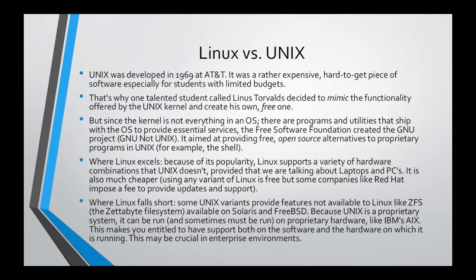Another thing is that because Unix is a proprietary system, it can — and sometimes must — be run on proprietary hardware. For example, IBM's AIX is a very famous operating system created by IBM that must be run on an IBM machine, namely the Power machine. You cannot run AIX on any other machine. This means the same vendor provides both hardware and software. In a large enterprise environment, when you have a mission-critical application that must work 24 by 7, having one vendor responsible for both hardware and software means you can open a ticket and they will solve the problem in the least possible time.